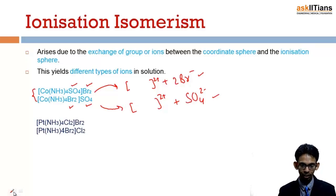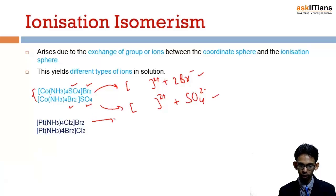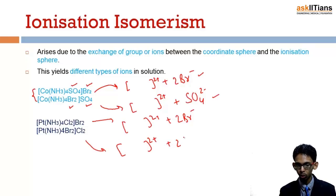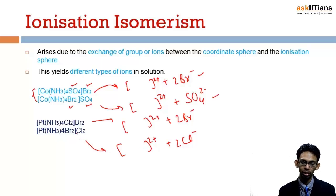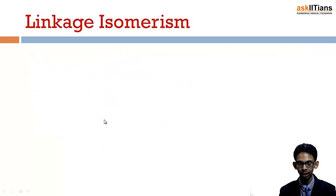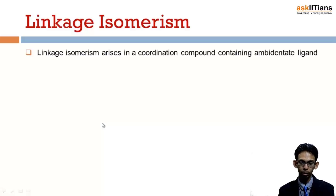Another example: when the first compound is dissolved in water, it produces a complex ion along with two bromide ions, while the second one produces a complex ion along with two chloride ions. In the second one, chloride ions are produced; in the first one, bromide ions are produced. They produce different ions when dissolved in water, so they are known as ionization isomers. The next type is linkage isomerism.